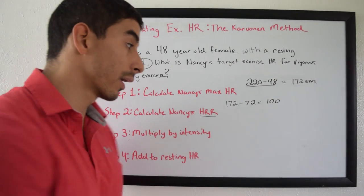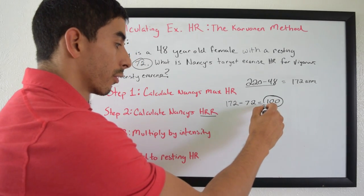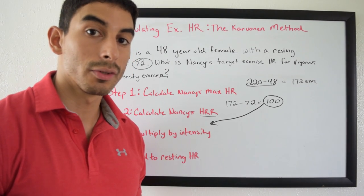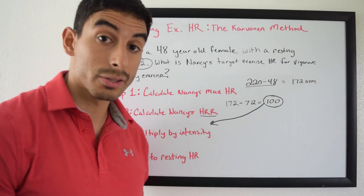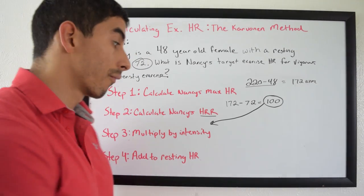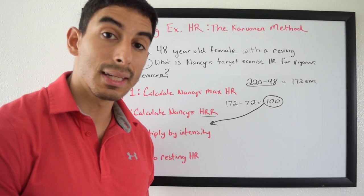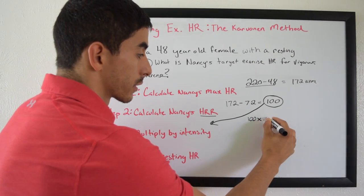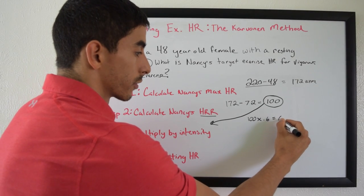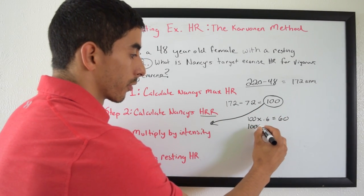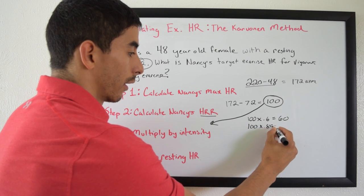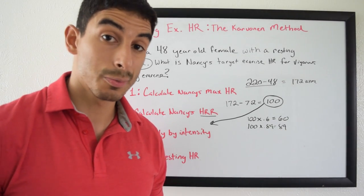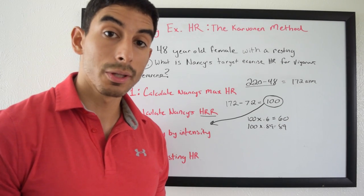Step 3 is to multiply the heart rate reserve by the intensity you're trying to achieve. This requires some memorization — you need to know the percentages that correspond to different levels of exercise intensity. For vigorous intensity exercise, it's 60 to 89% of heart rate reserve. So you take 100 times 0.6 for the lower end, which gives you 60, and 100 times 0.89 for the higher end, which gives you 89. You may have access to a calculator on the test, so as long as you know the steps and the formula, it won't be a big deal.